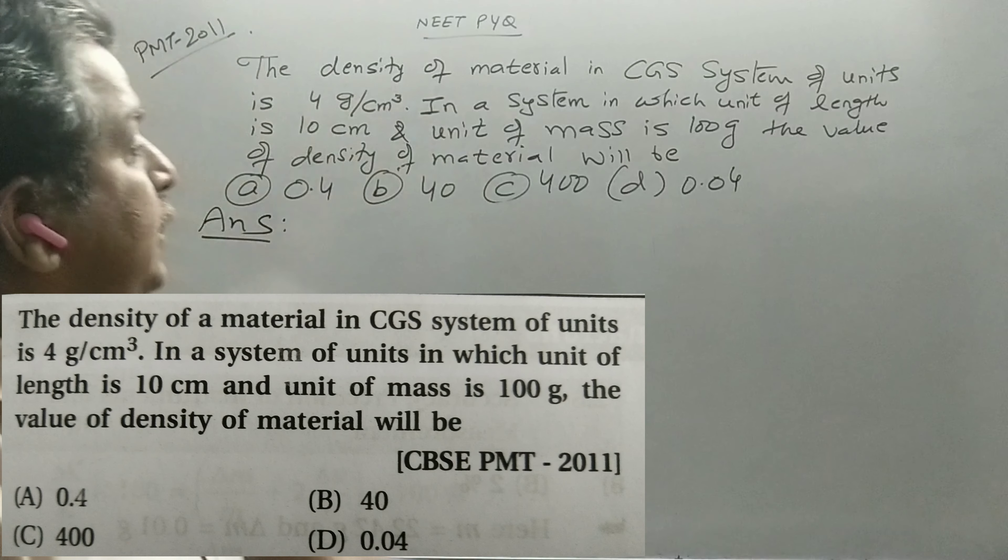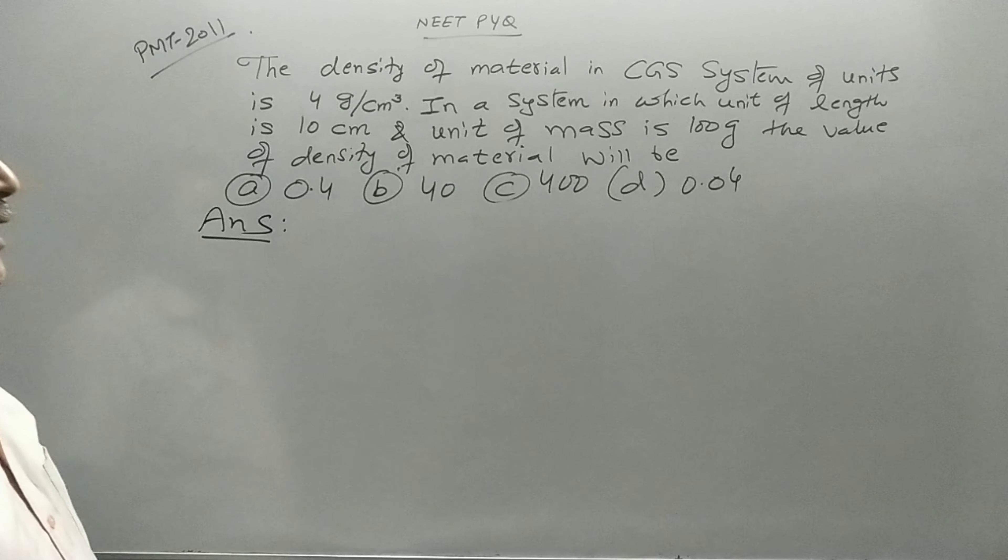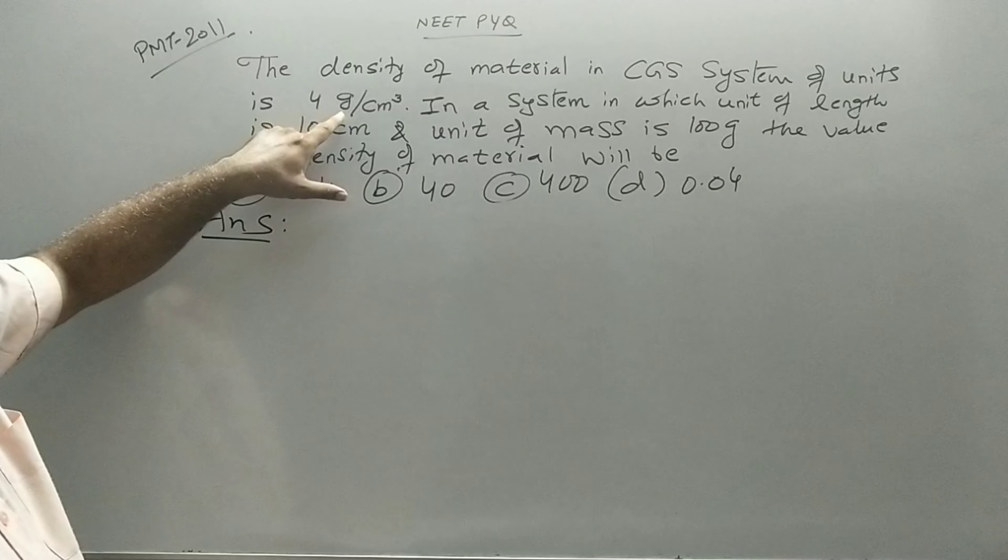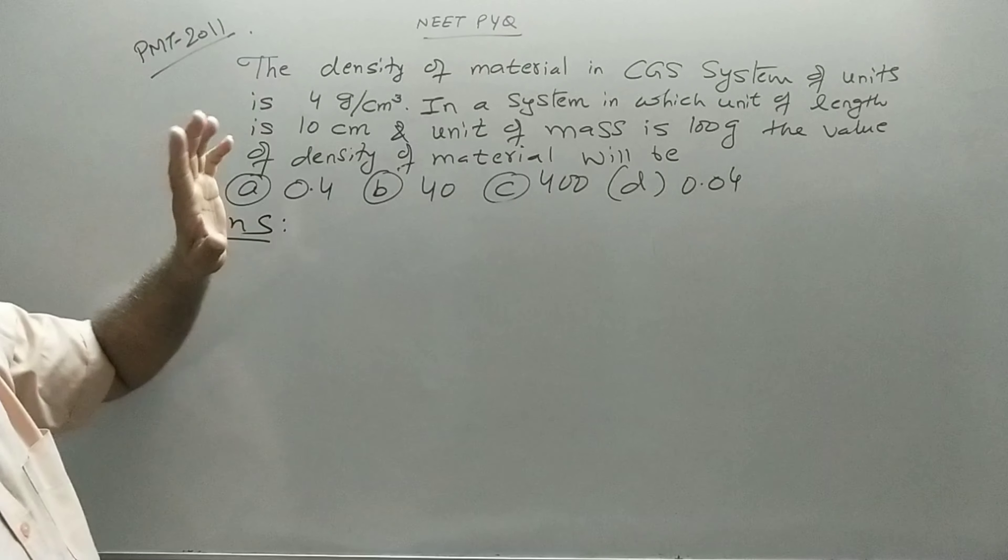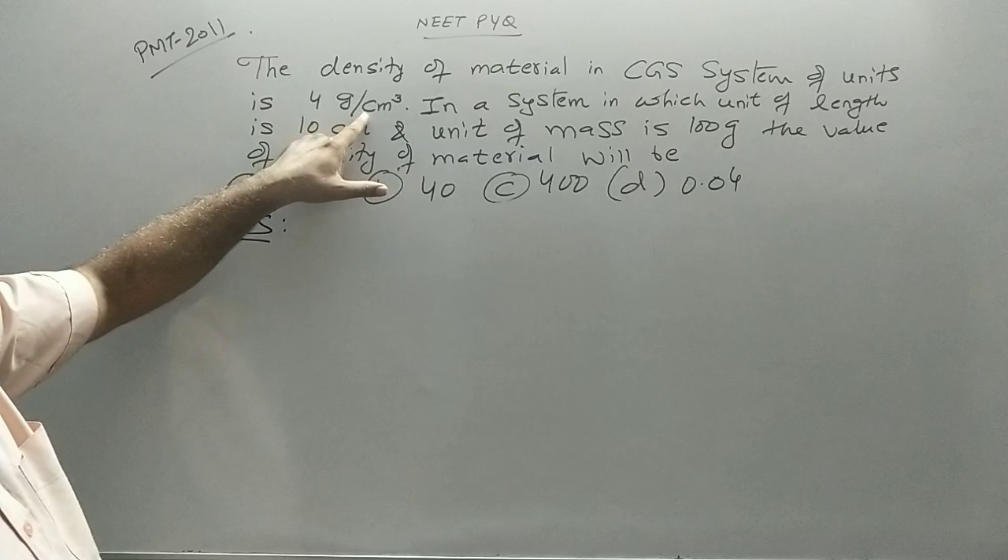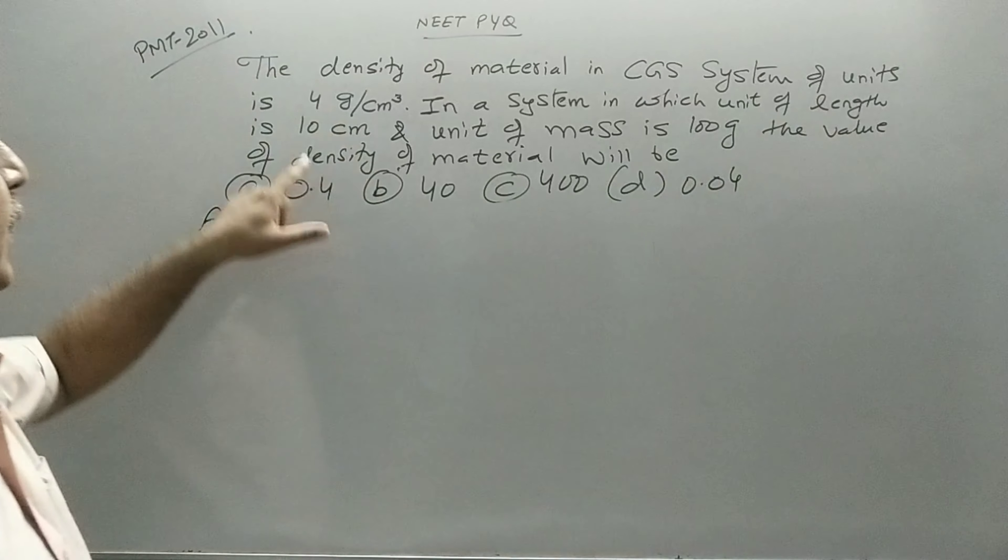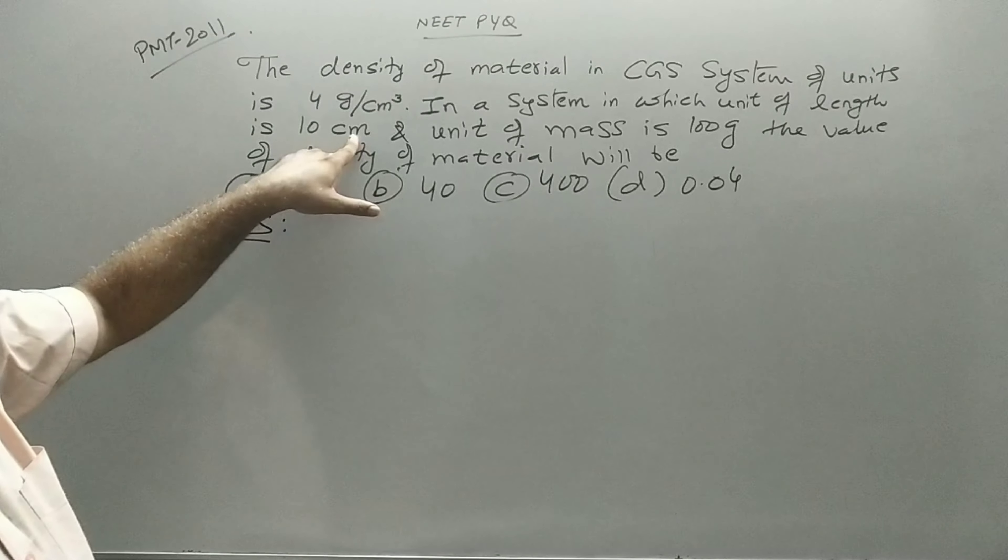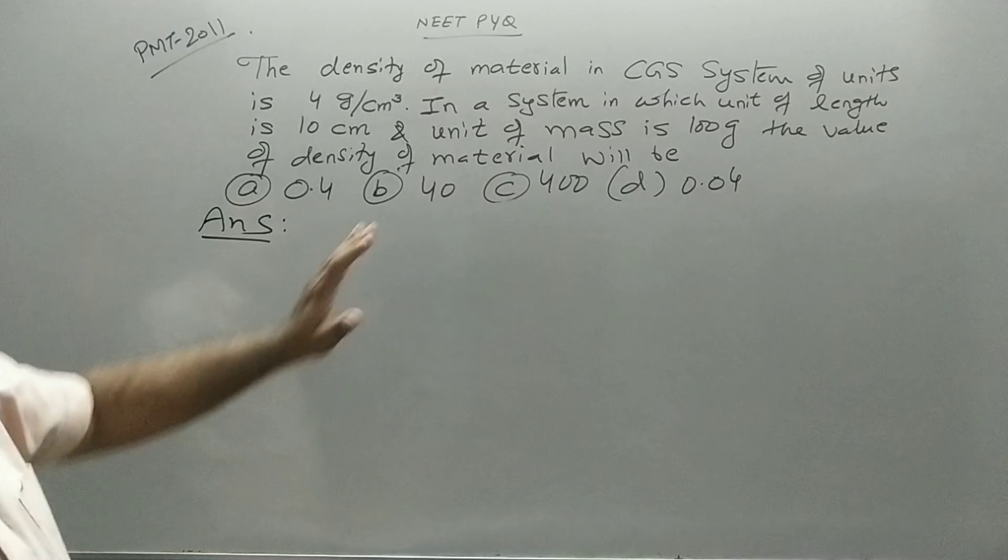So here a material density is 4 gram per centimeter cube. Now in CGS system we have the unit of gram as 1, that is 1 gram divided by 1 centimeter cube multiplied by 4. So we read this as 4 into 1 gram divided by 1 centimeter cube. But the new system has to measure the length of 10 centimeter and the unit of mass is 100 gram. So what is the new numerical value?